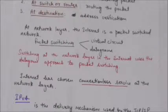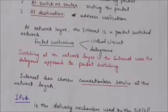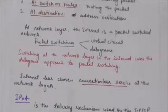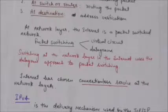The delivery of a packet can be accomplished using either a connection-oriented or a connectionless network service. The internet has chosen connectionless service at the network layer, so communication at the network layer in the internet is connectionless. In connectionless service, the network layer protocol treats each packet independently — each packet has no relationship to any other packet, and packets in a message may or may not travel the same path to their destination.